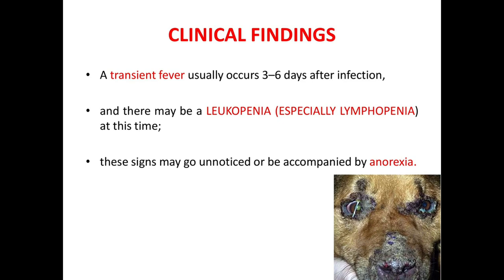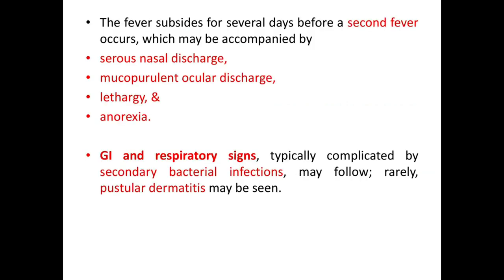A transient fever usually occurs three to six days after infection, and there may be leukopenia, especially lymphopenia, at this time. These signs may go unnoticed or be accompanied by just anorexia. The fever subsides for several days before a second fever occurs, which may be accompanied by serous nasal discharge, mucopurulent ocular discharge, lethargy, and anorexia. GI and respiratory signs, typically complicated by secondary bacterial infections, may follow, and rarely pustular dermatitis may be seen.